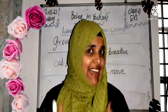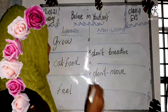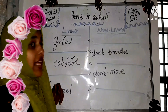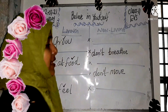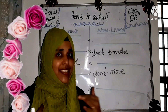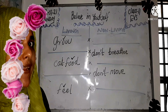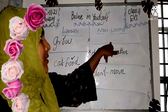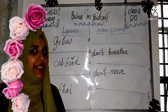In our last class we discussed different characters of living things. Living things can grow, eat food, feel, breathe, and move. These are the characters we discussed. Now you should look at the board, copy this work into your notebook, and complete the fill-in-the-blanks activity.